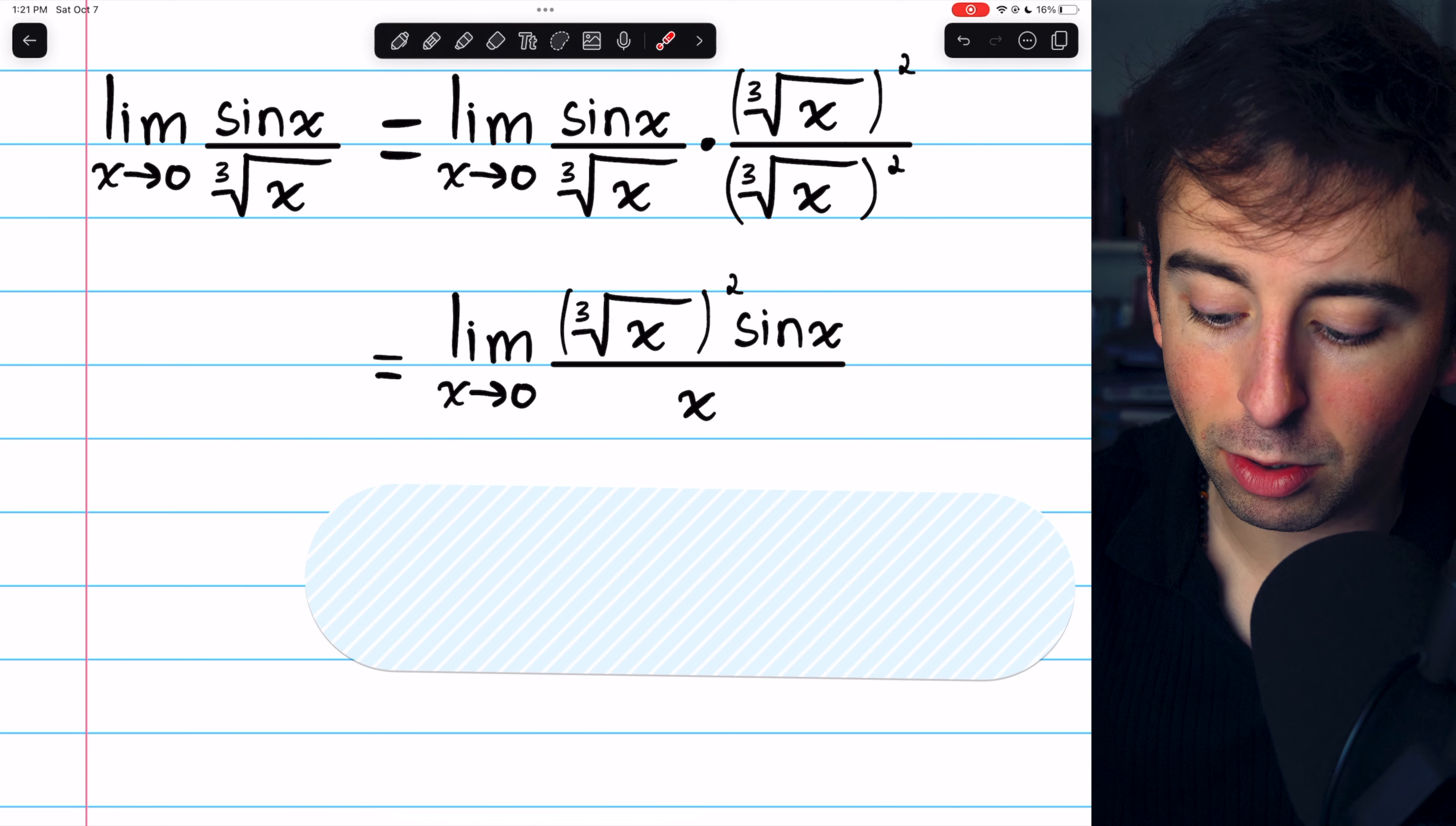of course, that it is 0, because the cube root of 0 is 0, squared is 0. And so our final answer is 0 times 1, which is 0.